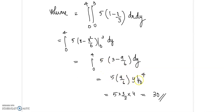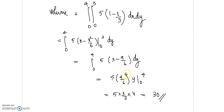Now integrating with respect to y with limits from 0 to 4, we get 5 times (3/2) times 4, so the value is equal to 30. That is the required volume under the given surface.